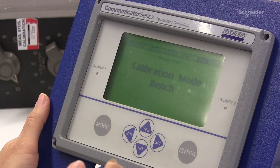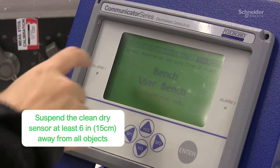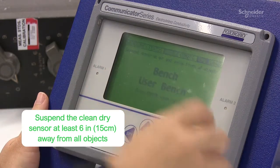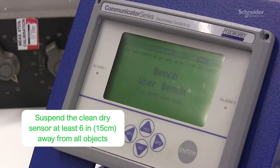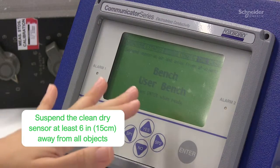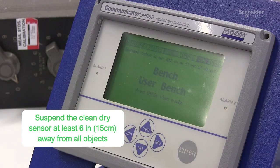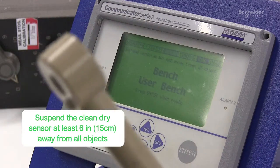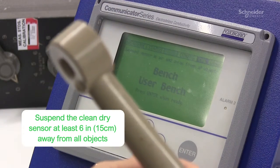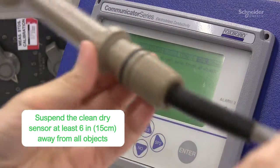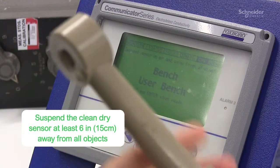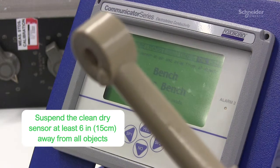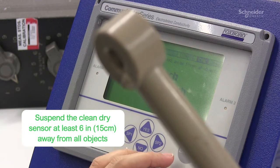Please wait. And then it says suspend sensor in air and away from all objects. So this is step number one. You should not press enter until you are ready. So following the instructions, hold your sensor in the air. We have an A71 ECSP here, hold it in the air and then press enter.